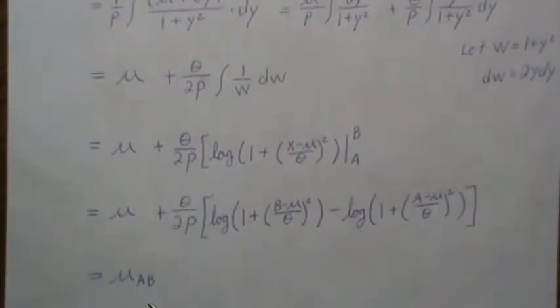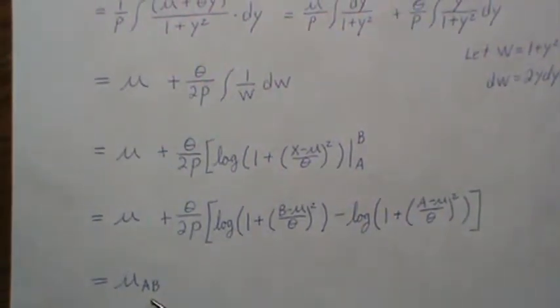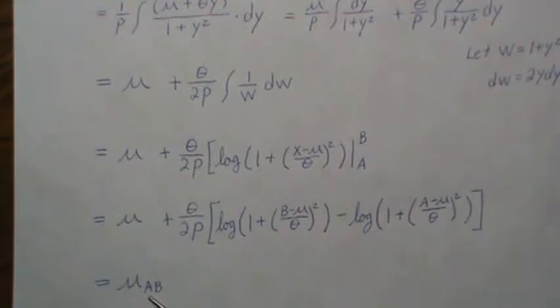So you plug in B, and then it's minus plug in A. And that's it. That's the mean. We're going to call that mu_AB. And it's the mean of a Cauchy truncated at A and B. Later in the second moment, I get lazy. Instead of carrying this term around, I just call it capital L. So I wish I had introduced it here, but I didn't.